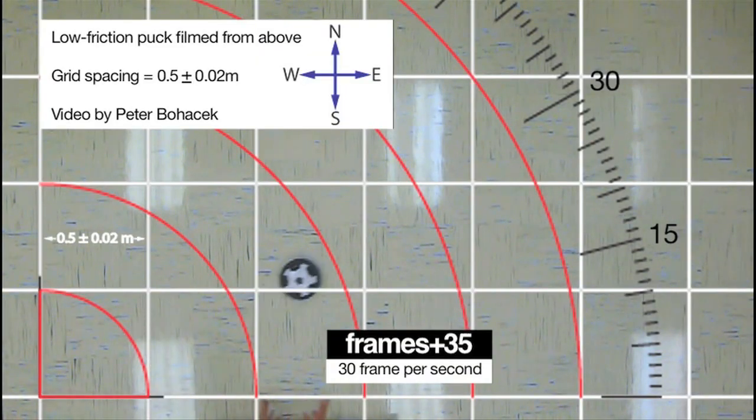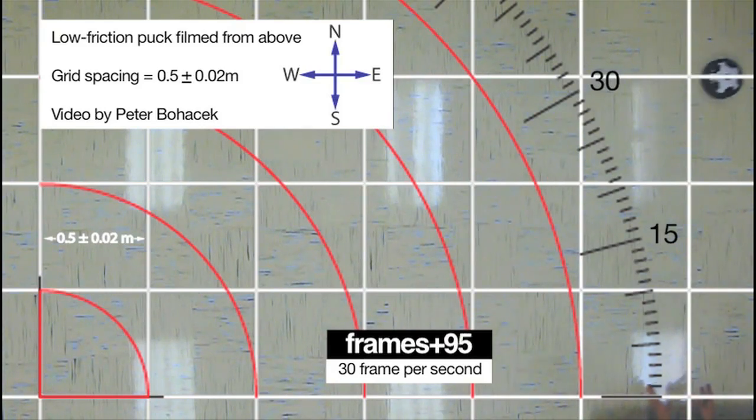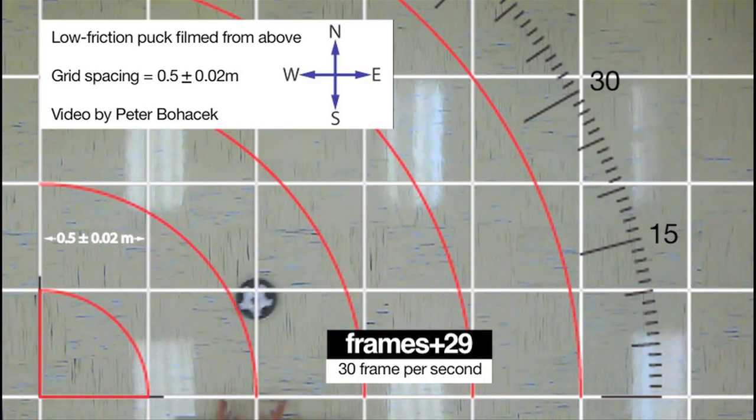Here's another example, a low friction puck sliding across the lab floor, filmed by a camera on the ceiling. The grid and frame counter allows students to calculate the x-direction velocity and the y-direction velocity.